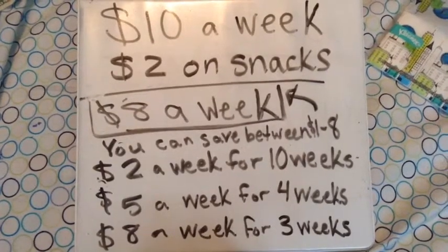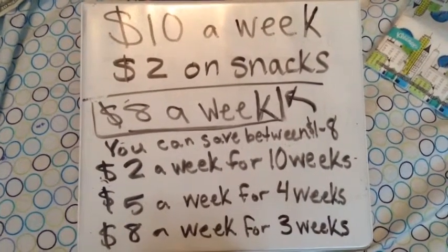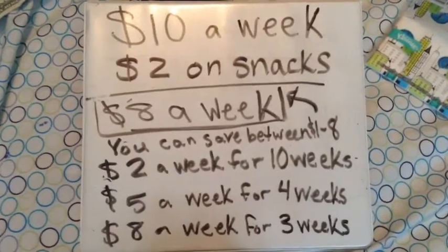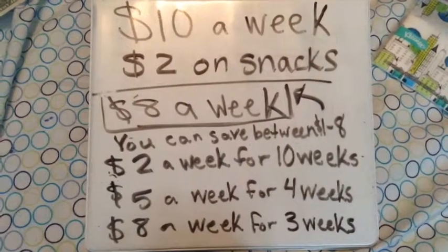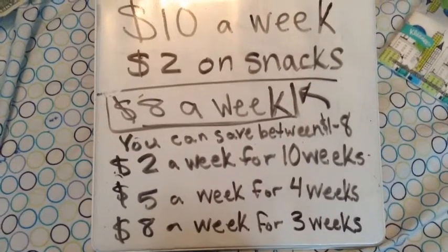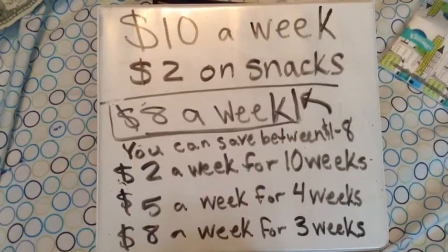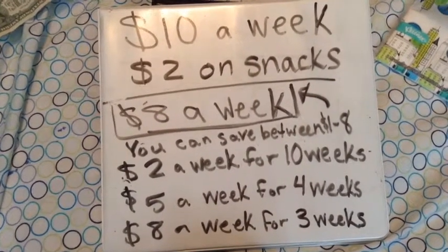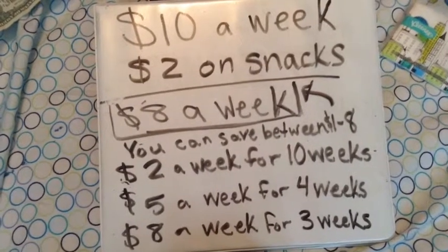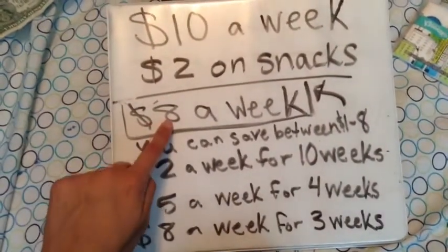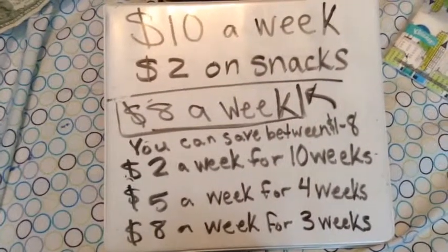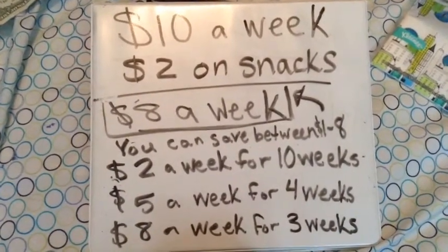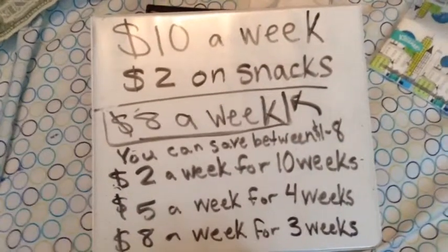Here are my goals. So if I get $10 a week and spend $2 on snacks every week, that leaves me between $1 and $8 to save for that video game. If I save $2 a week for 10 weeks, that's almost 3 months. $5 a week for 4 weeks — that doesn't sound too bad. I have to wait 1 month to get the video game, and that still leaves me 3 extra dollars to spend on whatever else I might want. So I like that.